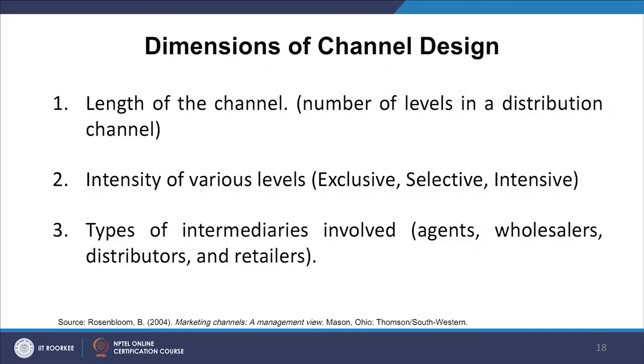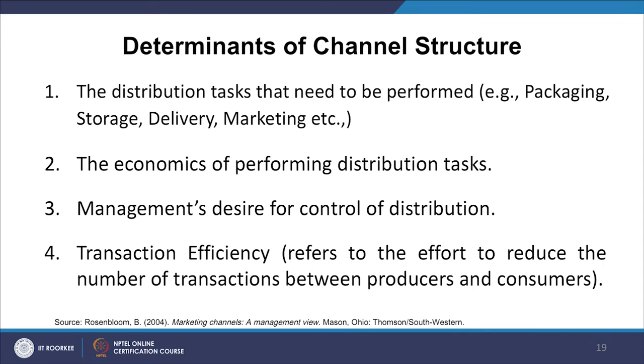There are dimensions of channel design: length of channel — number of levels in a distribution channel — intensity of various levels, and types of intermediaries involved, that is agents, wholesalers, distributors and retailers. There are also determinants of channel structure: the distribution tasks that need to be performed — packaging, storage, delivery, marketing and so on. If you require the product to be sold while being stored, your channel partner must have that space. For example, if a cold chain is required for product distribution, you need that capability from your channel partners.